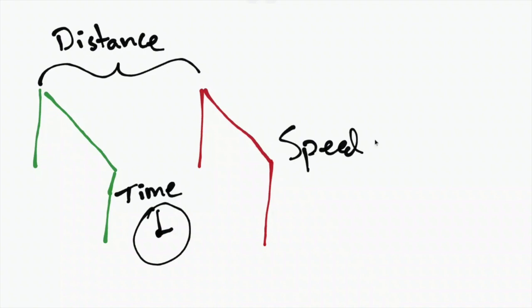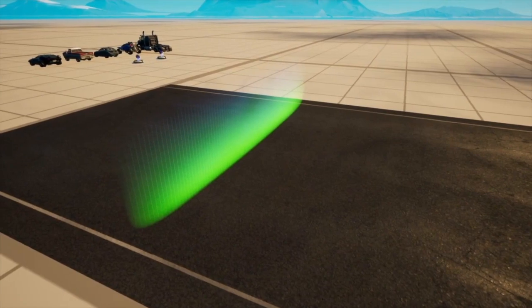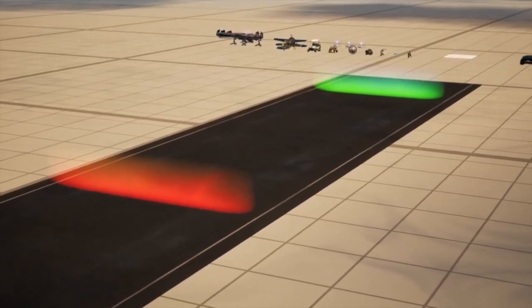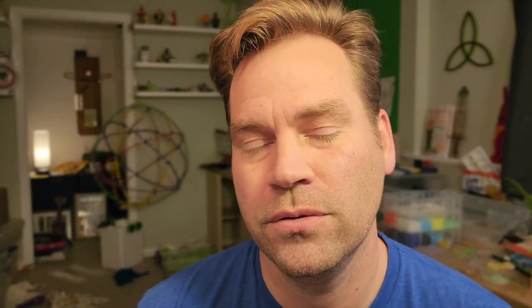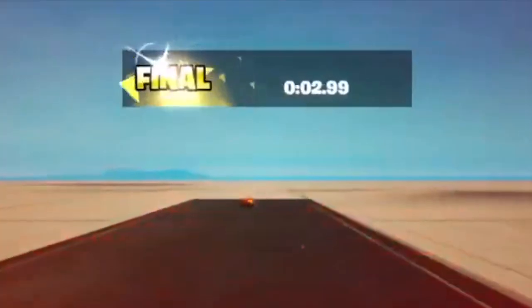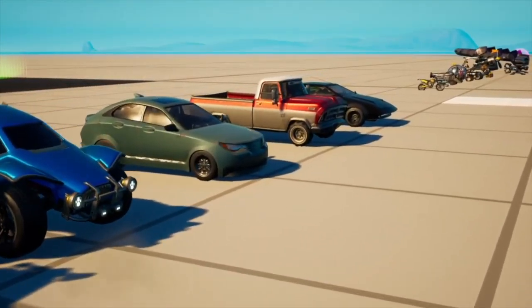If you know the distance between those two gates and the time it takes for the object to travel from one to the other, you can calculate the speed, because speed is just distance divided by time. So I built a photo gate inside Fortnite Creative — there's a gate that starts a timer and another that ends it — and the time is kept using the race manager, which tracks time accurately to the nearest hundredth of a second.